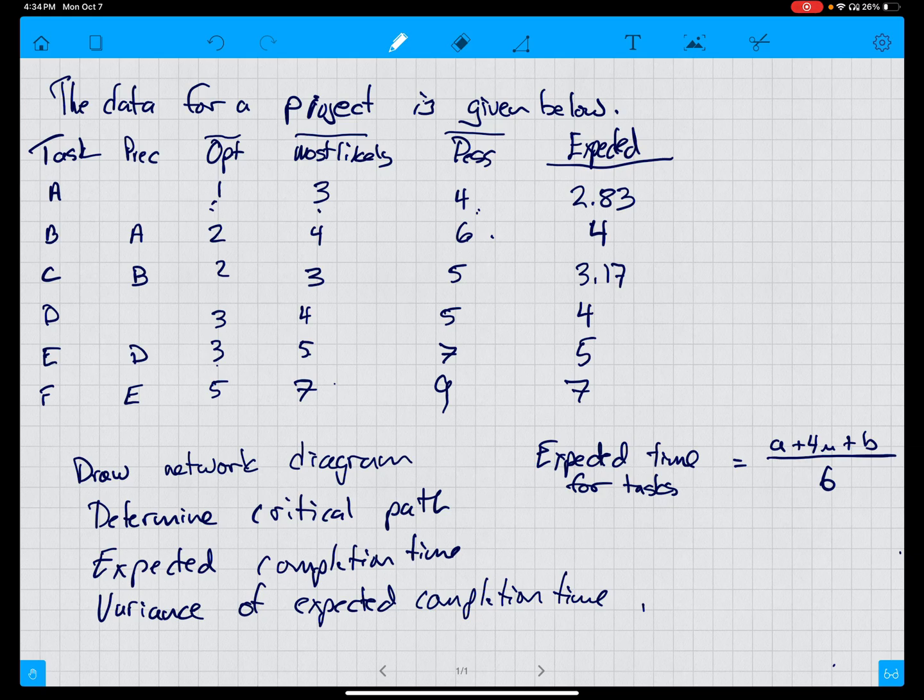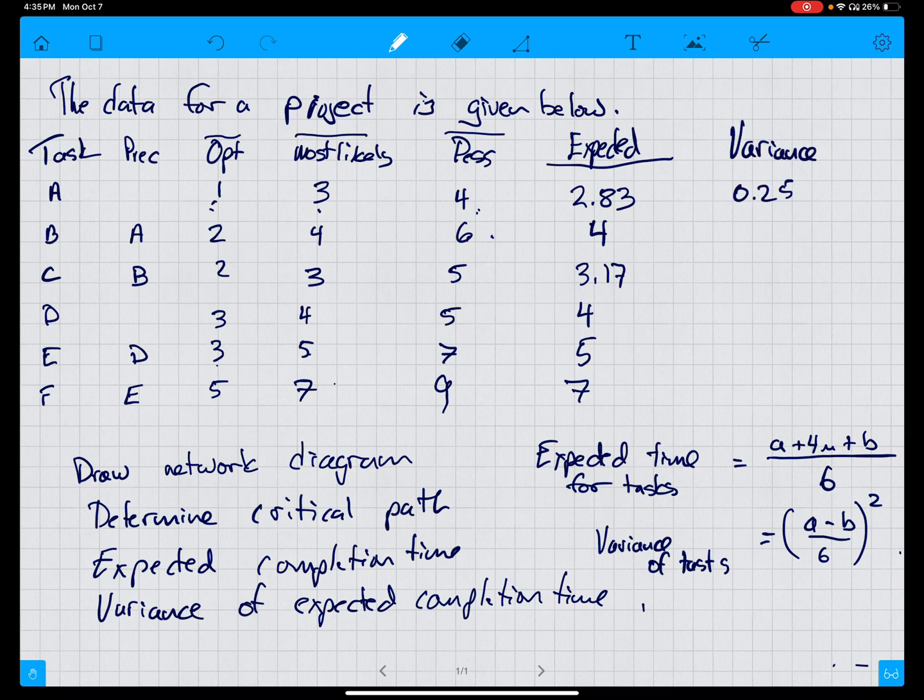Then to calculate the variance of tasks, the variance equals A minus B over 6 squared. So in this case, we have 4 minus 1 is 3, divided by 6 is 0.66, no, it's 0.5 squared is 0.25. Sorry, variance, 0.25.